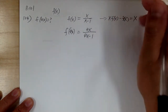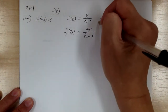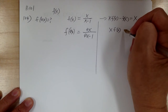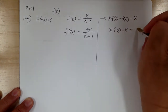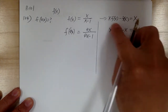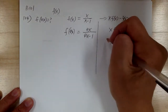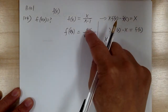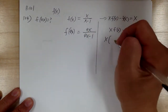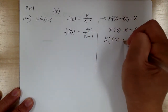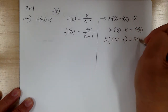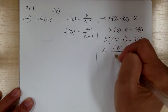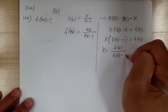Move this over — x times f of x minus x equal to f of x. Move it over so we can factor the x. We're solving for x in terms of f of x so we can substitute back in. This becomes x times (f of x minus 1) equal to f of x, so x equals f of x over f of x minus 1.